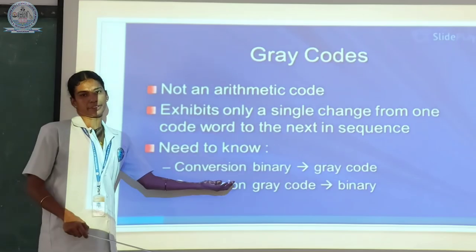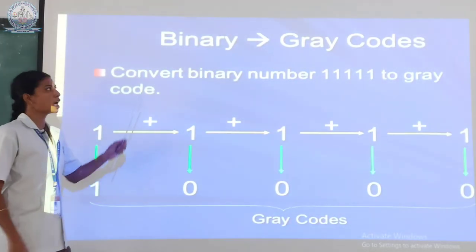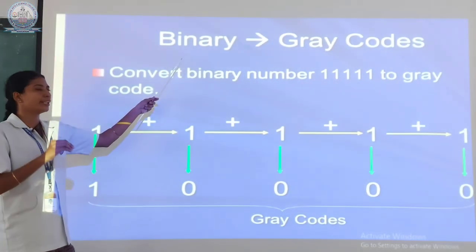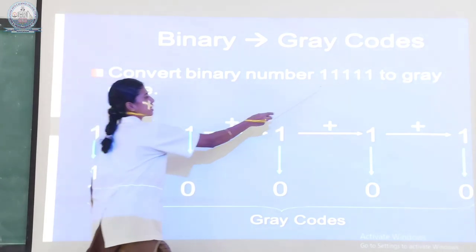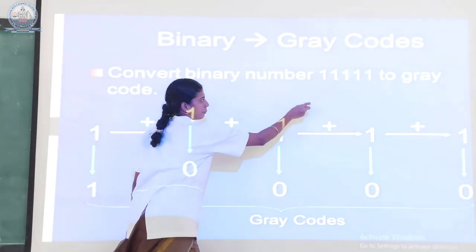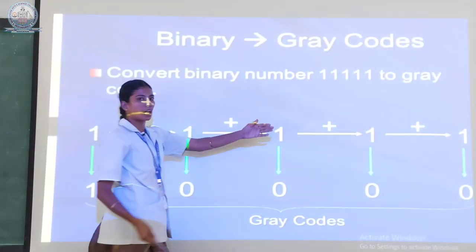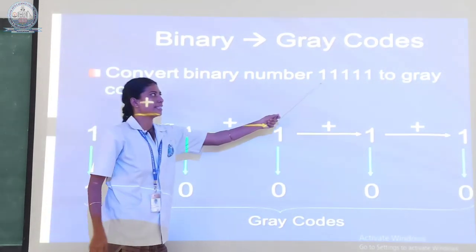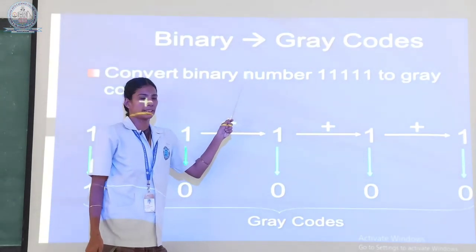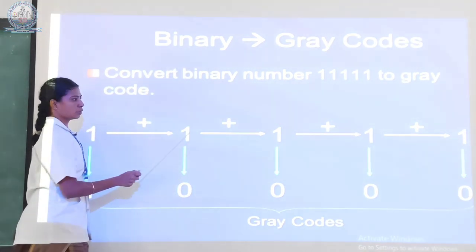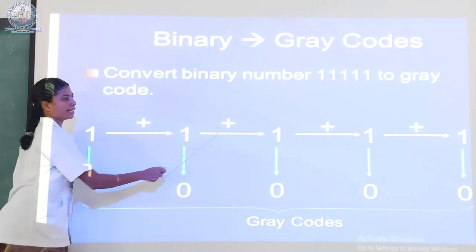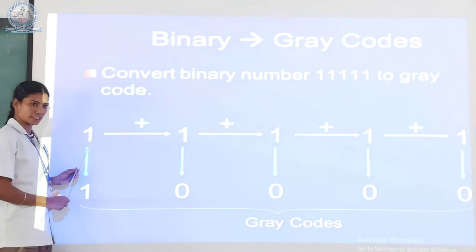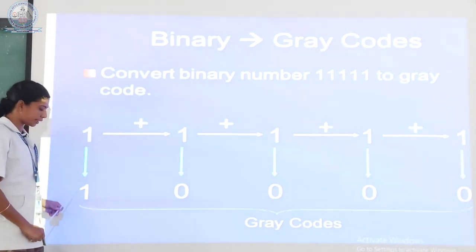The first one is binary to gray code. How to convert binary to gray code? Here the binary numbers are given. The binary numbers are to be converted to gray code. For example, totally 5 digits are present in the binary number. The 5 digits represent the binary number. Here you take the first digit 1, and the 1 is put directly as the first gray code digit.